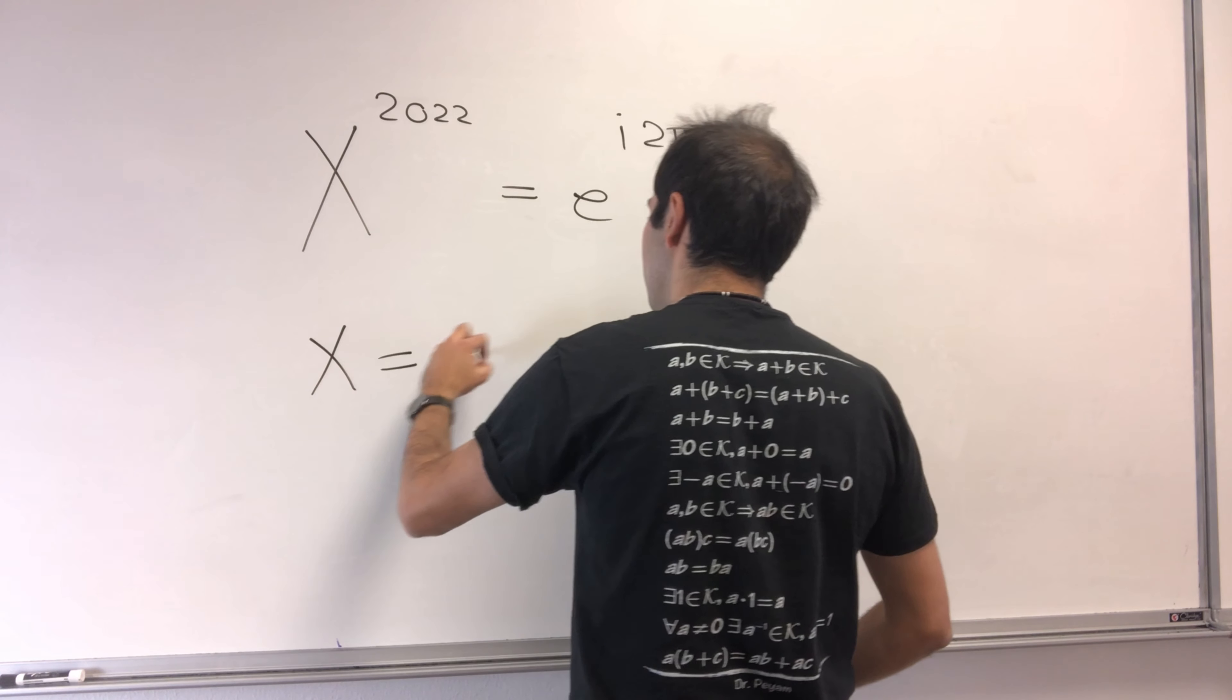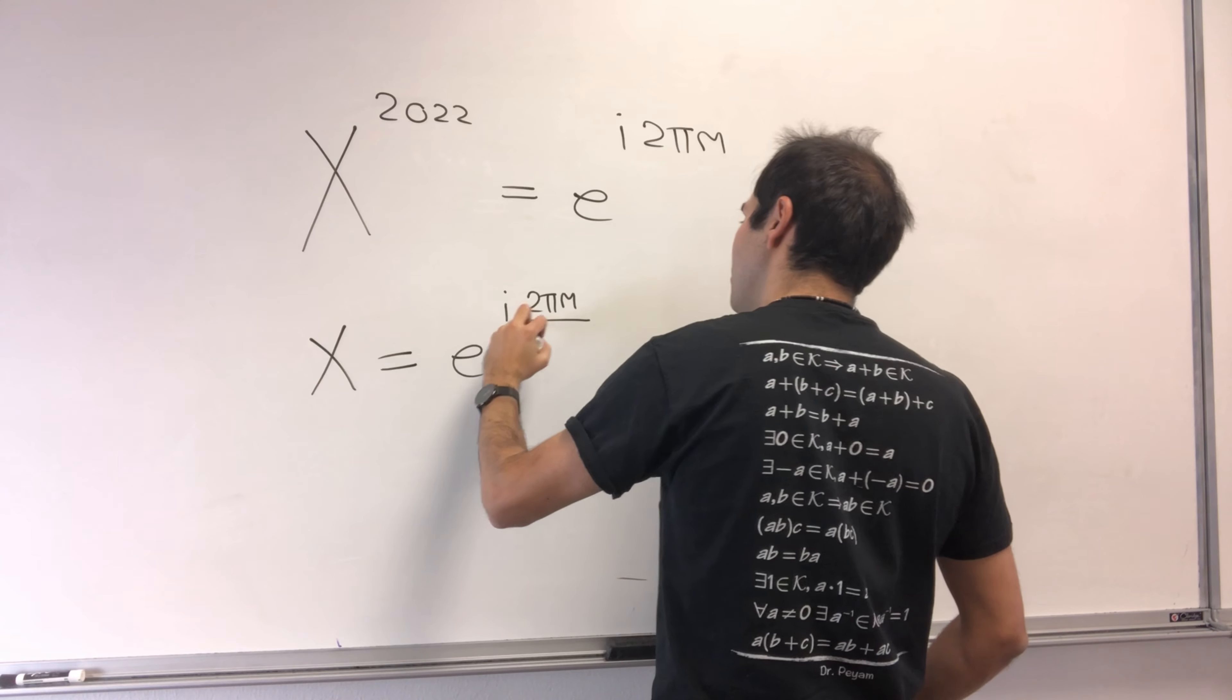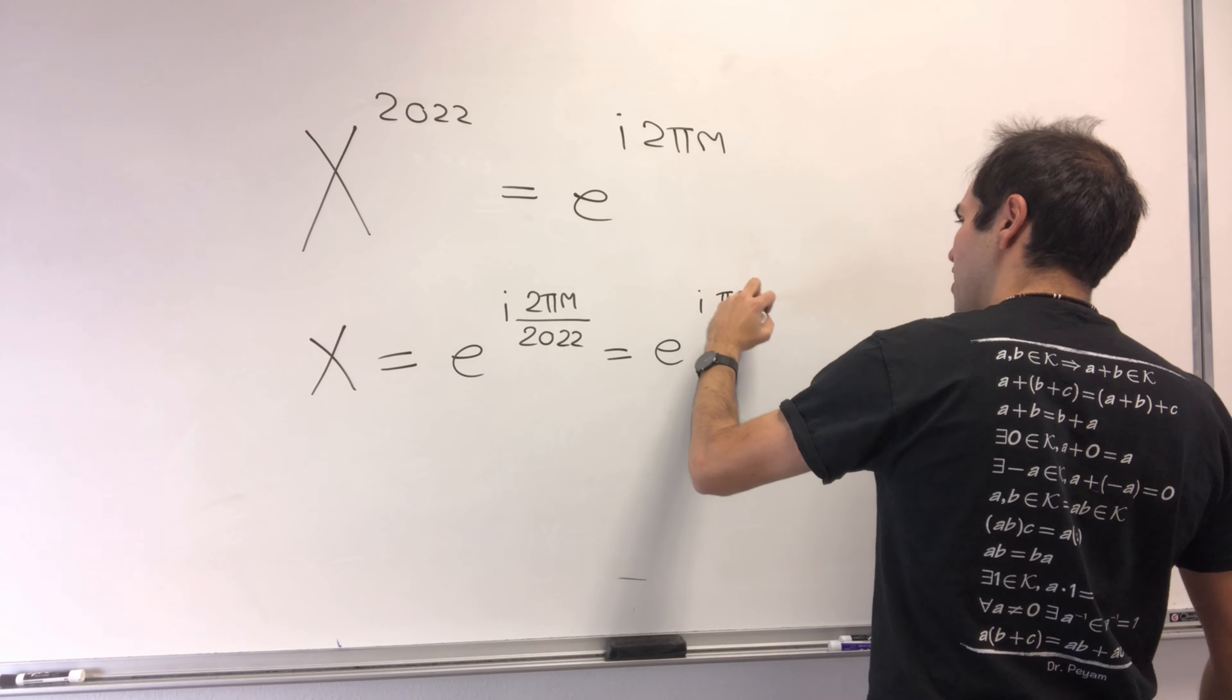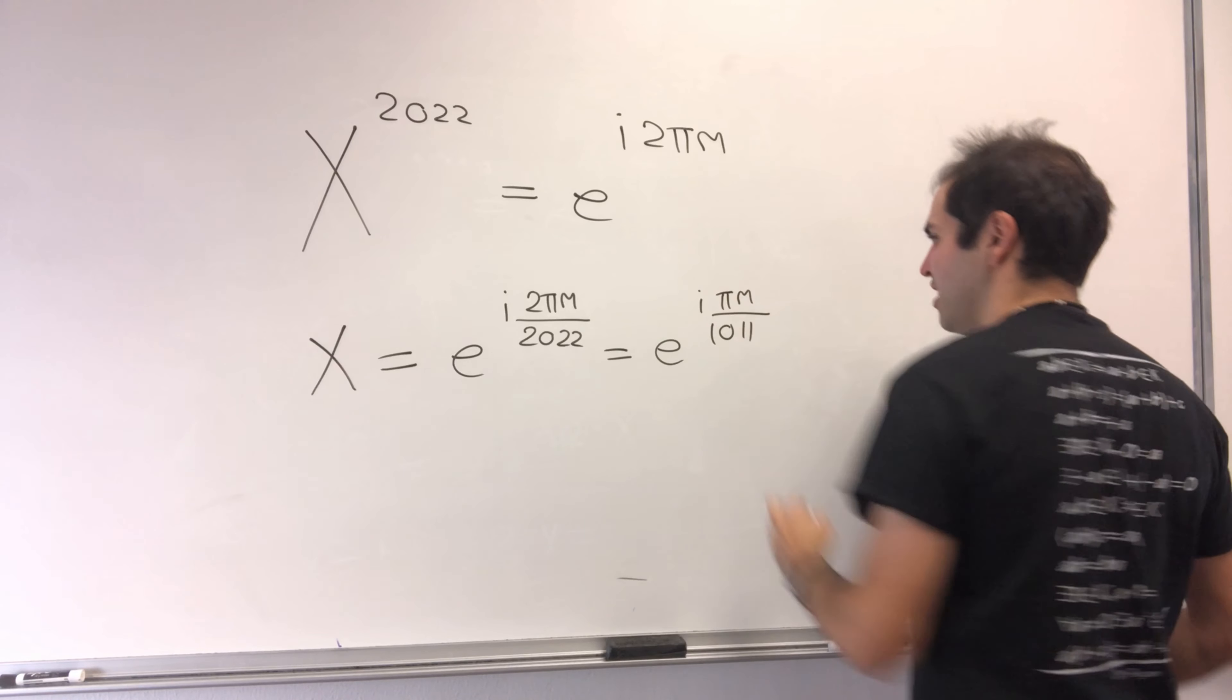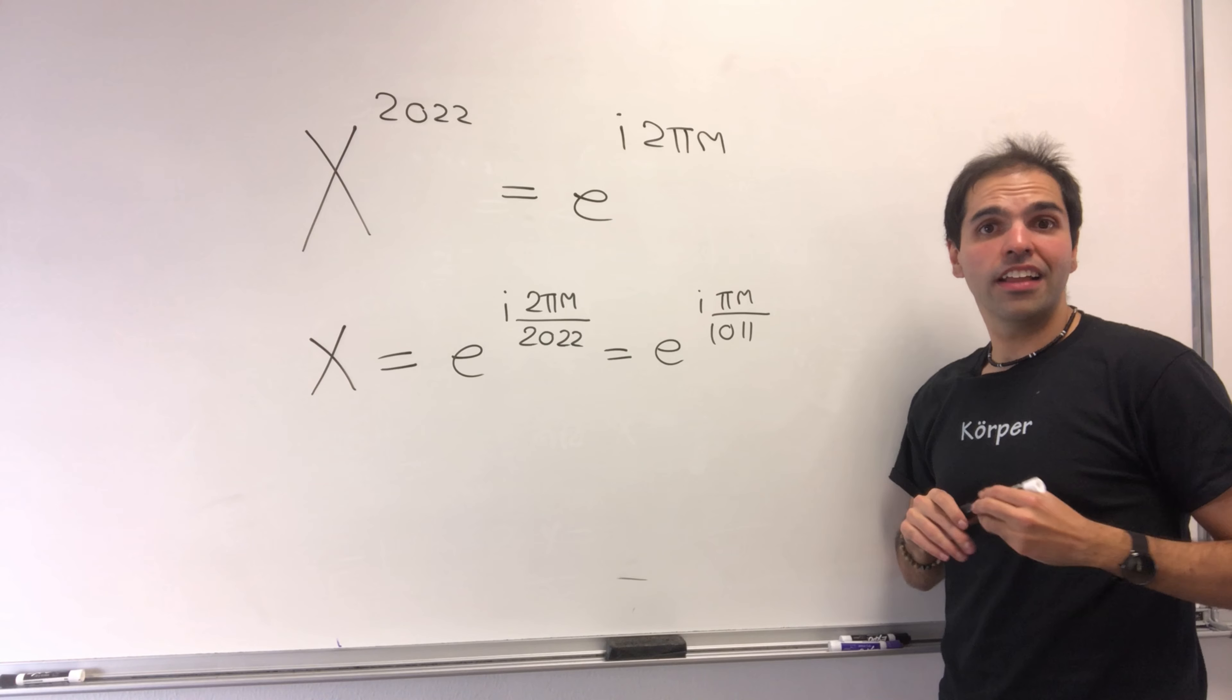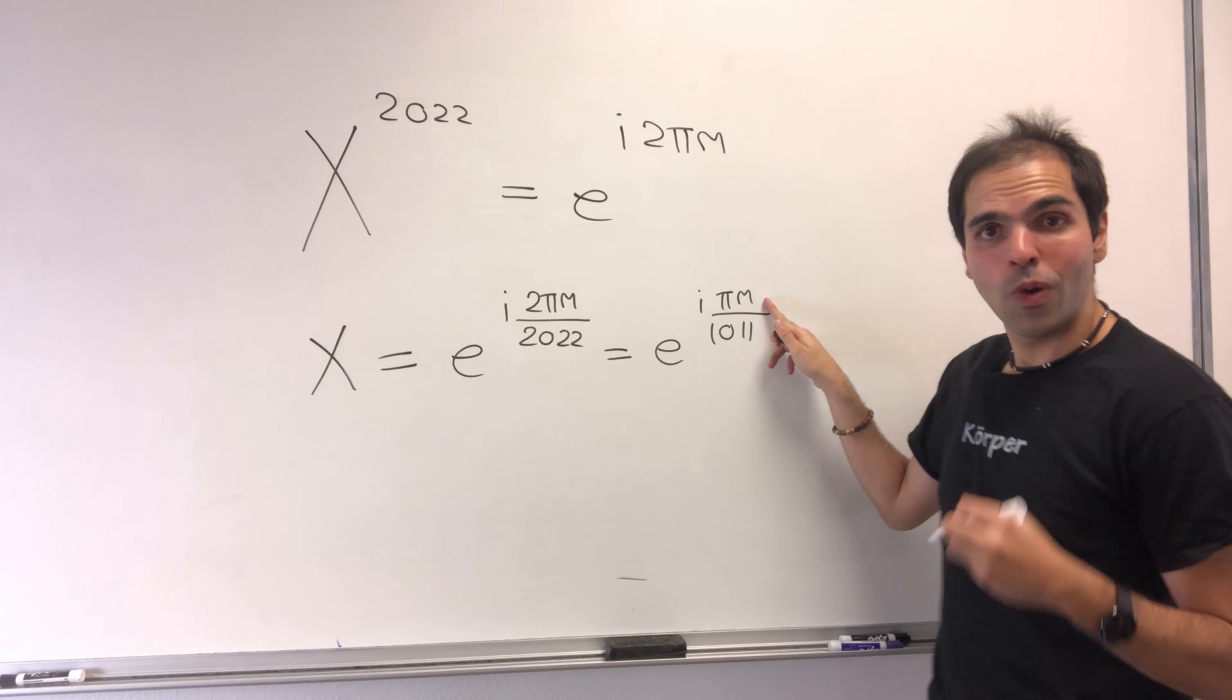That becomes e^(i·π·m/1011). You can indeed check that there are 2022 roots of this, because with m equals 0 you get 1.